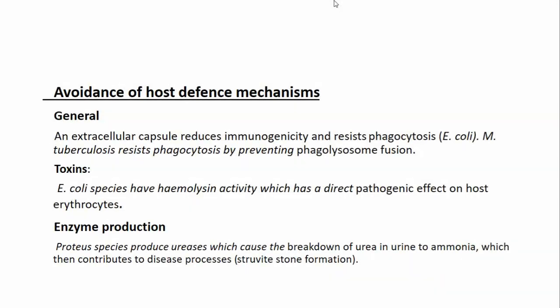Bacteria avoid host defense mechanisms through their extracellular capsule, which reduces immunogenicity and resists phagocytosis. With toxins — for instance, hemolysin in E. coli — bacteria cause direct pathogenic effects on host erythrocytes. Certain bacteria also produce enzymes; for instance, Proteus produces urease, which converts urea into ammonia and contributes to disease processes such as stone formation.